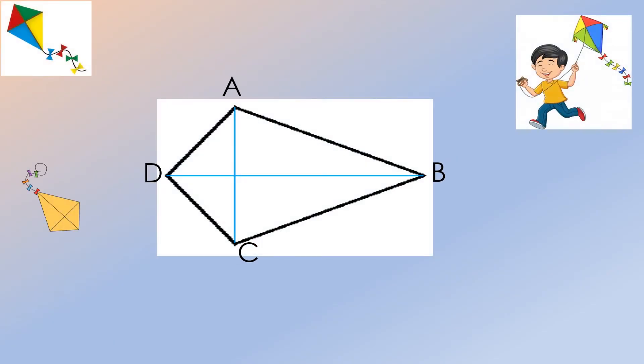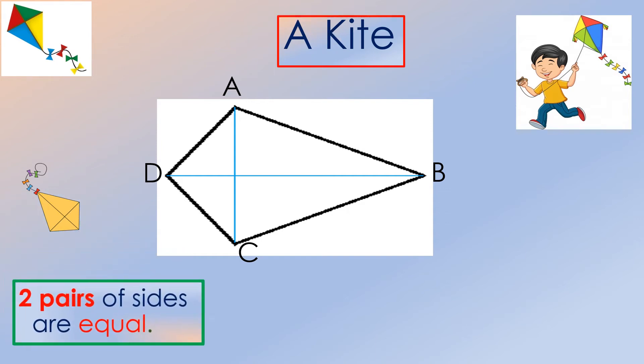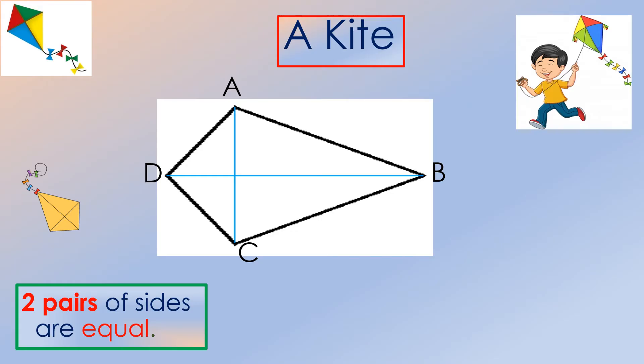Let's take a look at the kite. A kite is a quadrilateral in which two pairs of consecutive sides are equal. In the given figure, side AB is equal to side CB. Another pair is side DA and side DC.